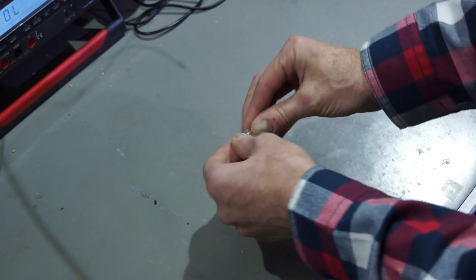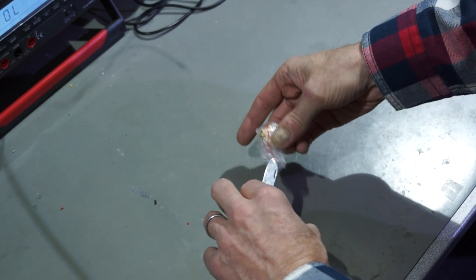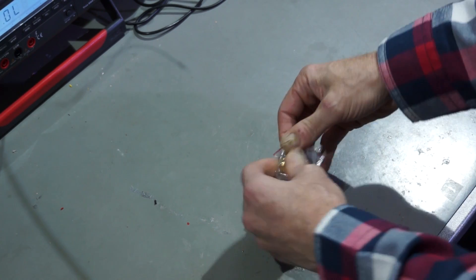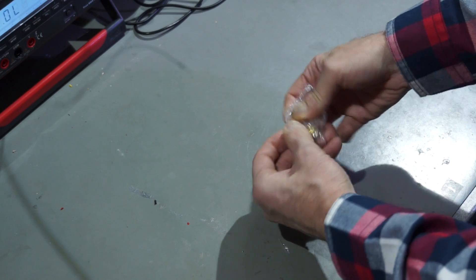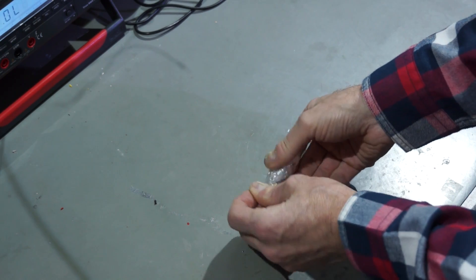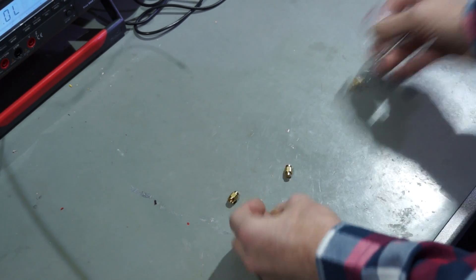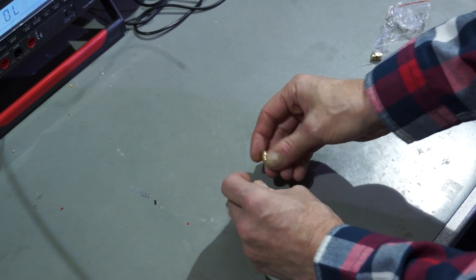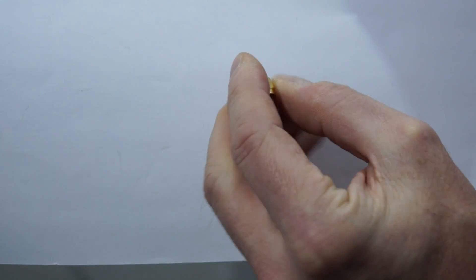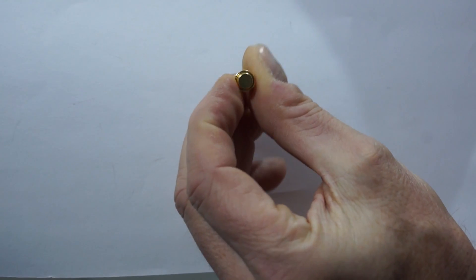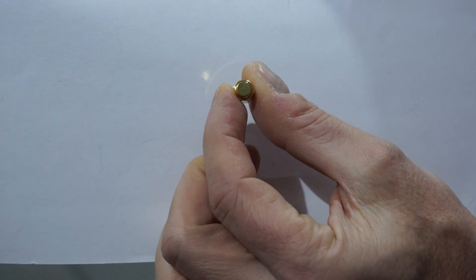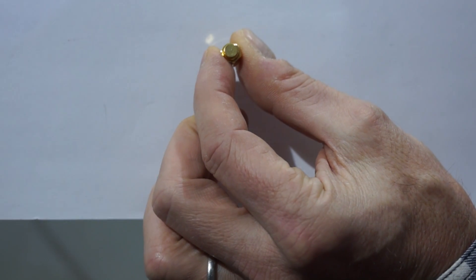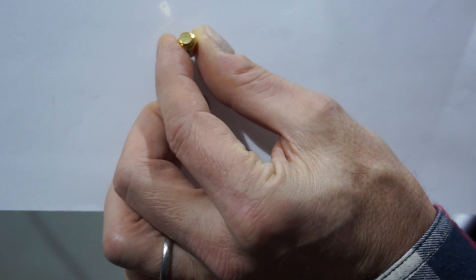Small one. There are some sort of connectors, SMA connectors. But no, they are not connectors. They have one connector, but on the other side it's closed. So these are so-called dummy loads. They have an impedance of 50 ohms and they are used to close transmission lines.